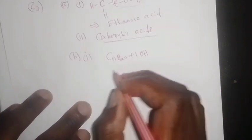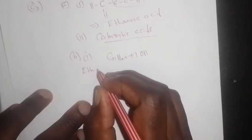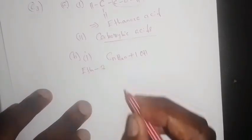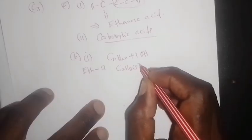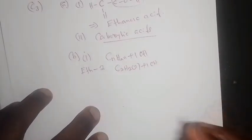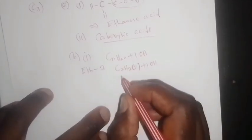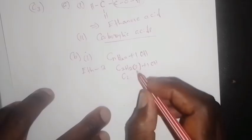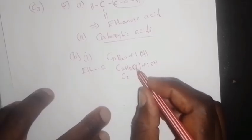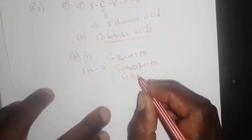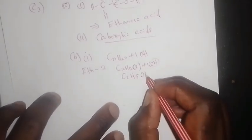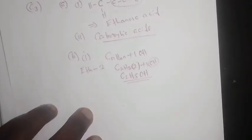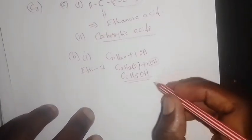In that formula, n means the number of carbons. For ethanol, the number of carbons is two, so where there is n we put two. It becomes C₂H₂ₓ₂₊₁OH. Two times two is four, plus one gives five, so the molecular formula is C₂H₅OH. The OH is what we call the functional group. That is the formula.